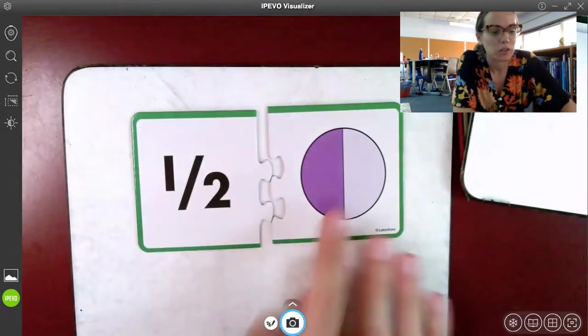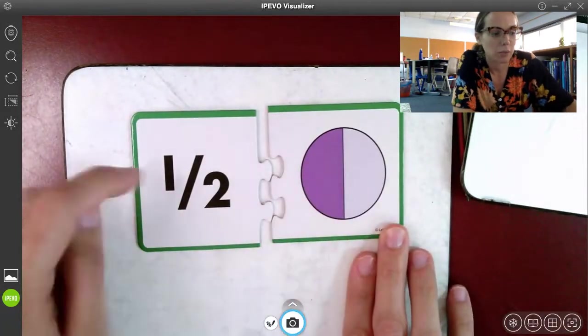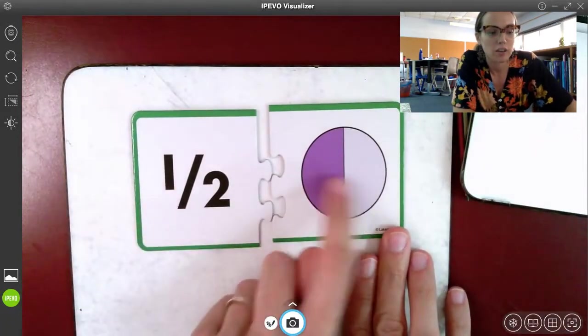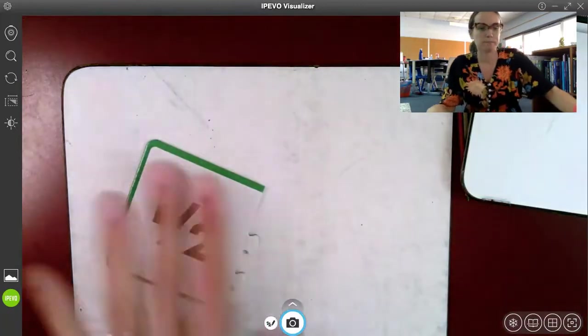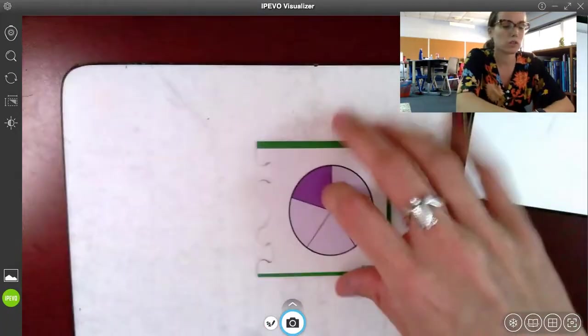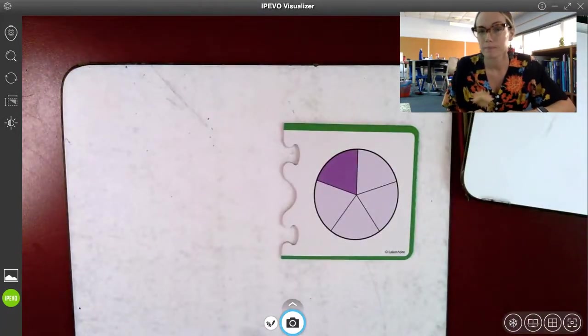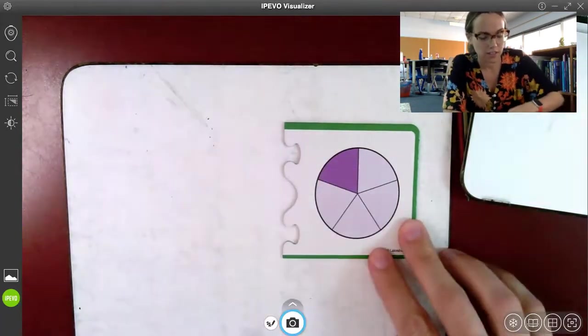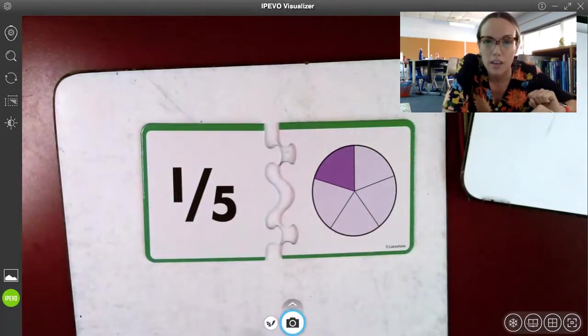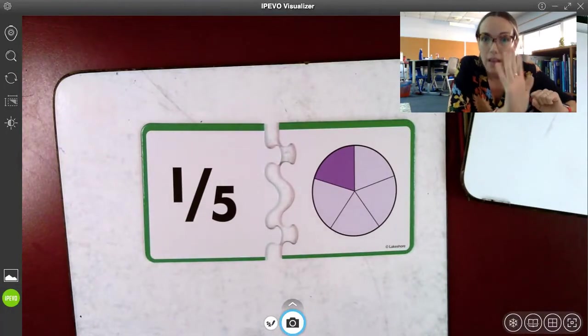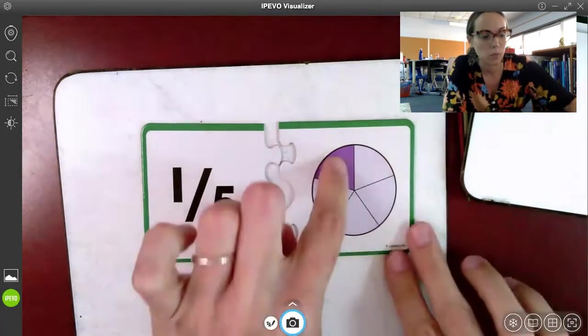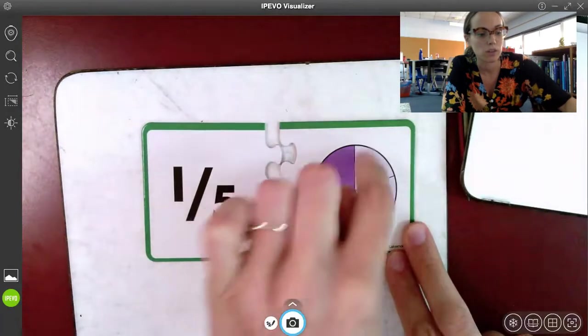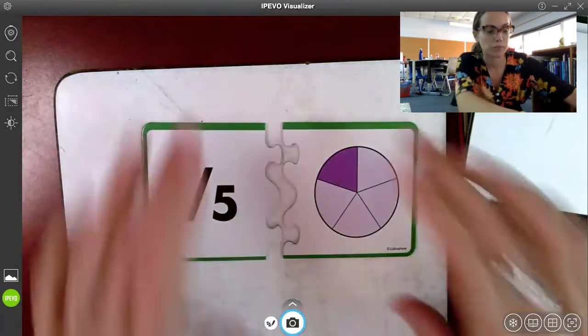One half, right? There's one part shaded, which gives us our numerator, and then the denominator is two because there's two equal pieces. Let's give this one a try. Well, this is one-fifth. One part is shaded, and there are five equal pieces. One part shaded, and one, two, three, four, five pieces total. One-fifth.